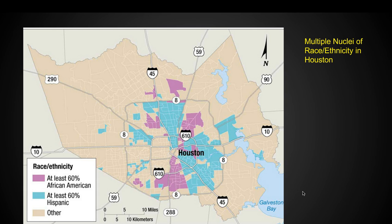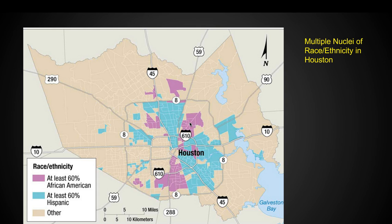Looking at the multiple nuclei of race and ethnicity in Houston, you can see it's kind of all over the place. There are nuclei of African Americans at least 60% concentrated in certain areas, plus additional nuclei elsewhere. Similarly, Hispanics have distinct nuclei in different parts of the city.